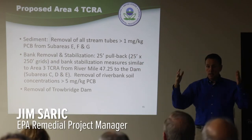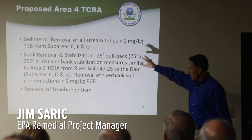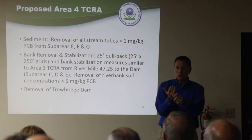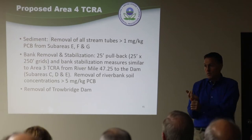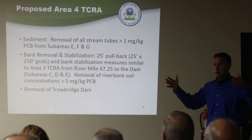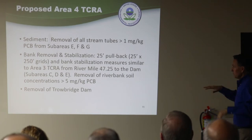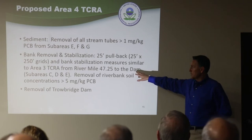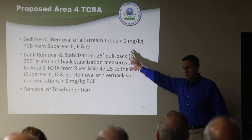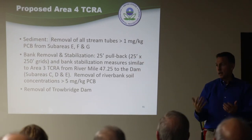So in-stream, the idea of this time-critical removal action is we're going to remove all the sediment that's greater than one part per million in those sub-areas E, F, and G — the downstream sediment areas. We're going to remove that sediment, stabilize the banks with about a 25-foot pullback to make them stable from an area about two and a half miles upstream of the dam, and then remove the Tropage Dam. That's all the work that this removal action is going to do.